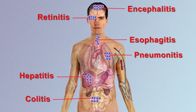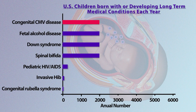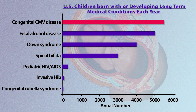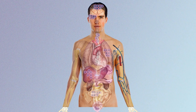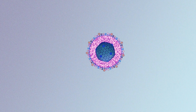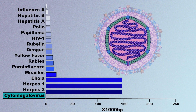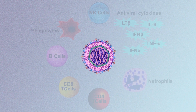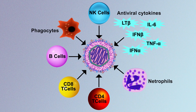Cytomegalovirus is the most common infectious cause of birth defects. It's a virus not controlled by a vaccine, and it is able to shut off immune responses at critical moments, making it uniquely difficult to develop a vaccine against. It possesses the largest genome among any virus known in human medicine, and it induces the most potent immune response ever described in human medicine.